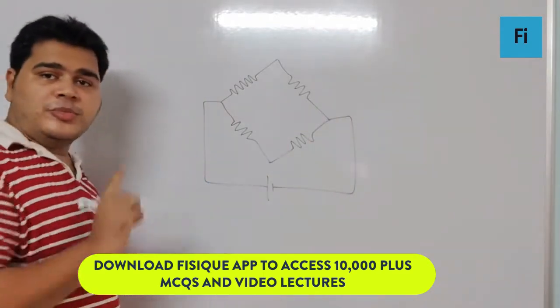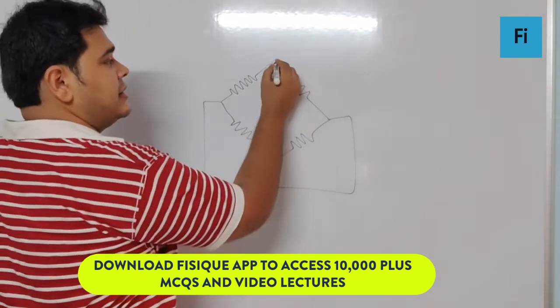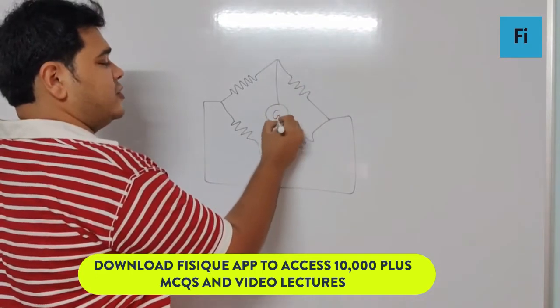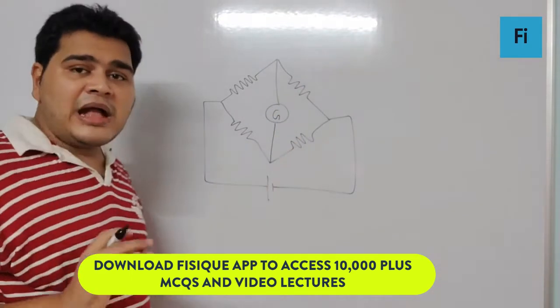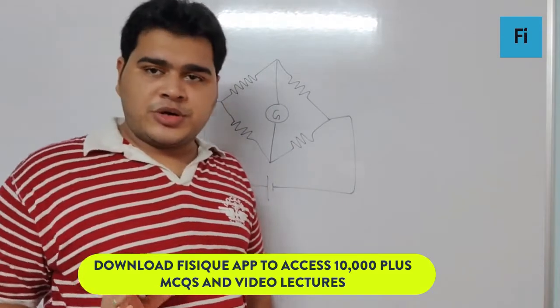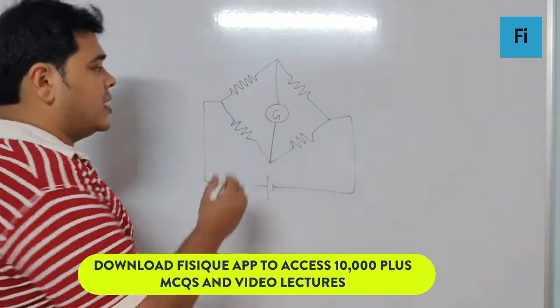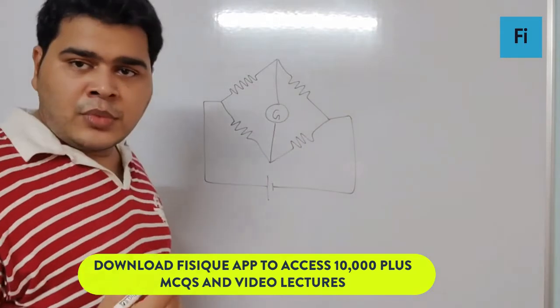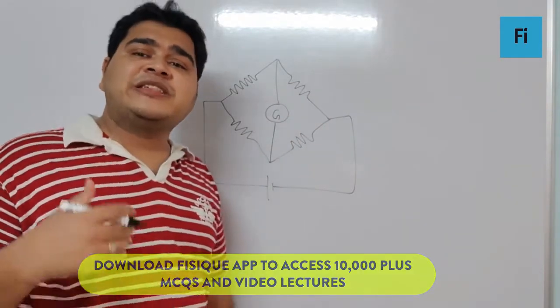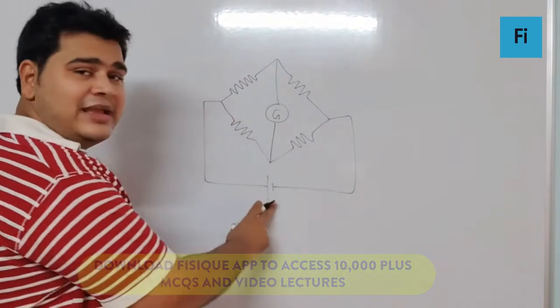Here we have the galvanometer, and if it is a balanced Wheatstone network, we can say we get a zero deflection over here. Now, if I change the position of the battery and the galvanometer...